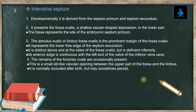The interatrial septum: developmentally it is derived from the septum primum and septum secundum. It presents the fossa ovalis, a shallow saucer-shaped depression in the lower part, which represents the site of the embryonic septum primum. The annulus ovalis, or limbus fossa ovalis, is the prominent margin of the fossa ovalis representing the lower free edge of the septum secundum. It is distinct above and at the sides but deficient inferiorly, and its anterior edge is continuous with the left end of the valve of the inferior vena cava.